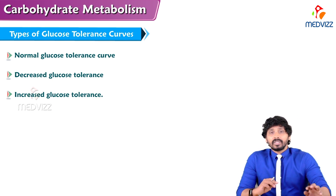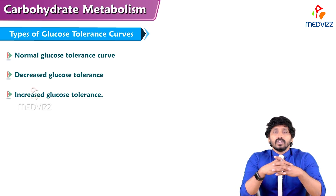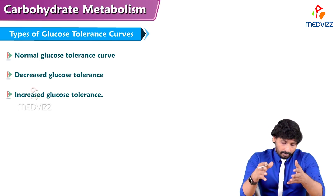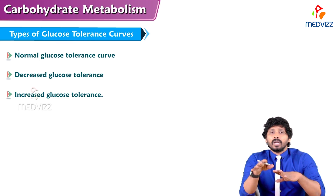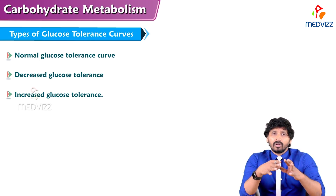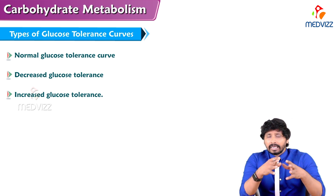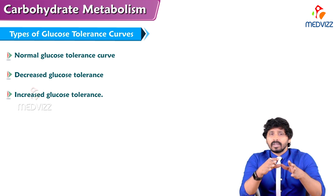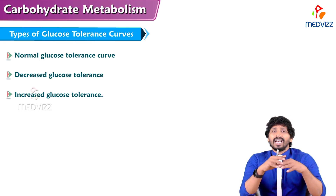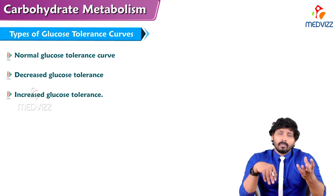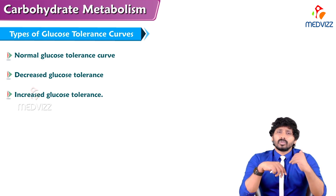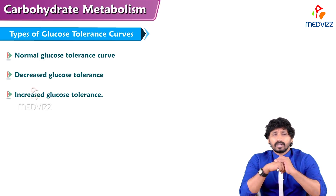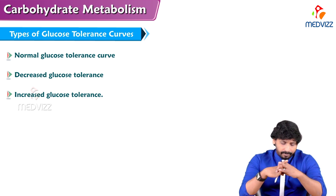In the GTT procedure, we first take blood glucose levels after overnight fasting. The person is asked to have dinner by 8 p.m. and consume nothing from 8 p.m. to 6 a.m. At 6 a.m., a fasting blood sample is collected and analyzed. After that, the person is given 75 grams of glucose dissolved in water to consume. After 2 hours, another blood sample is collected and analyzed for blood glucose concentration.